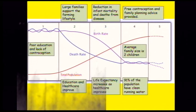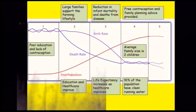In stage four — an example of where the UK is — we have free contraception and family planning advice, so we can control how many children we have. The average family size is about two children, and 91% of the population have clean running water, which means our death rate is very low. Our total population is increasing as life expectancy also increases.